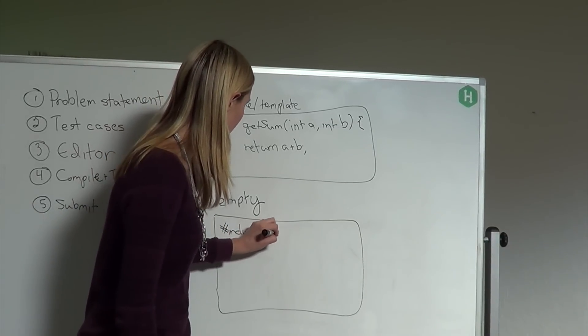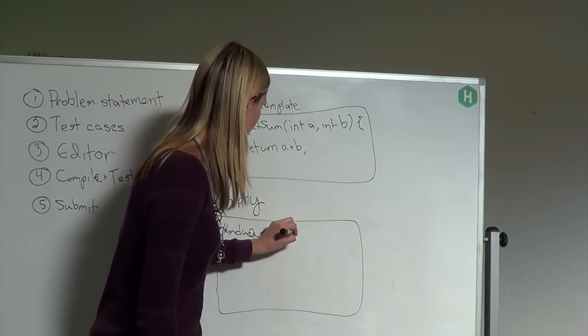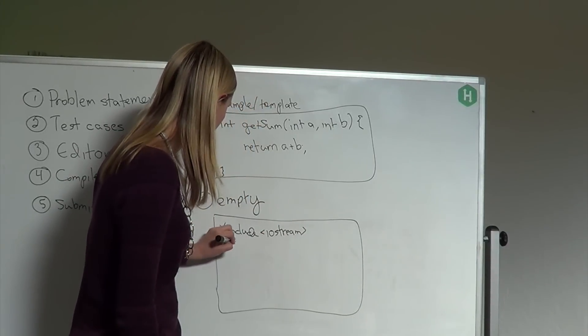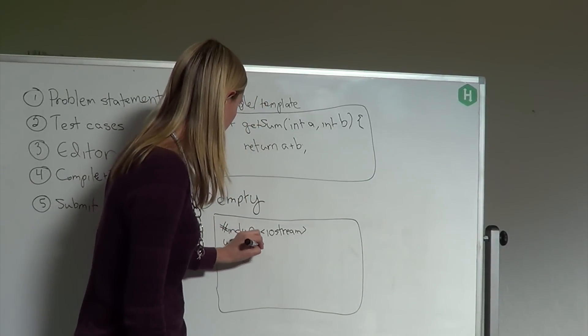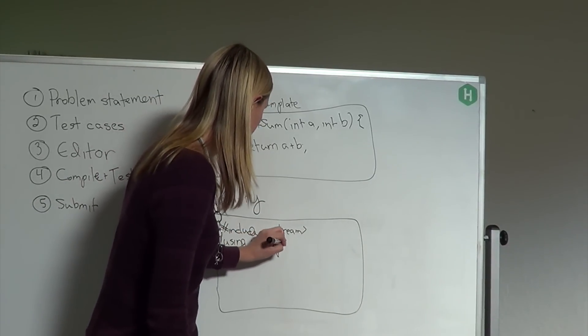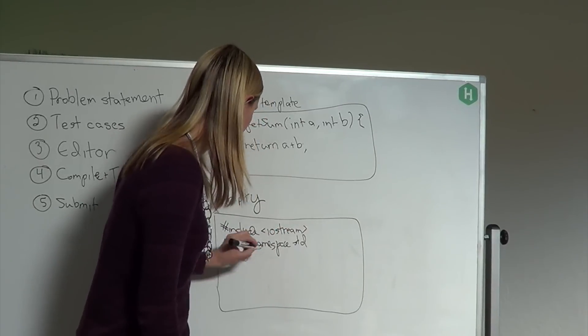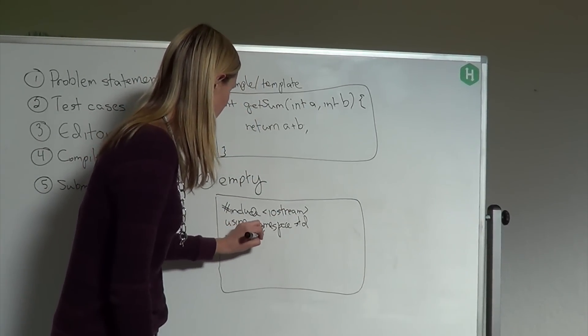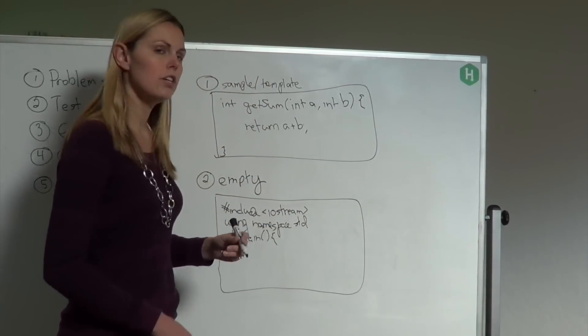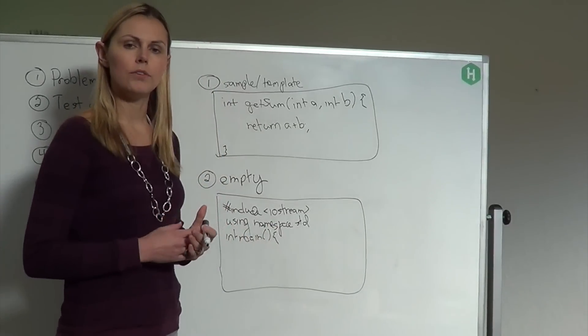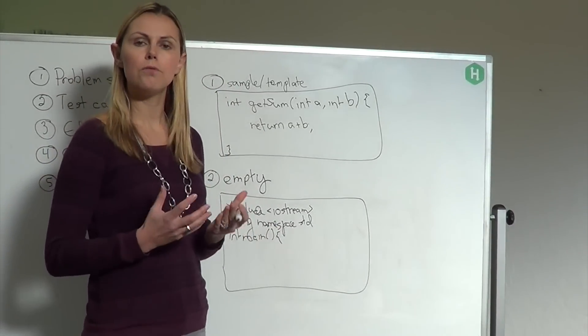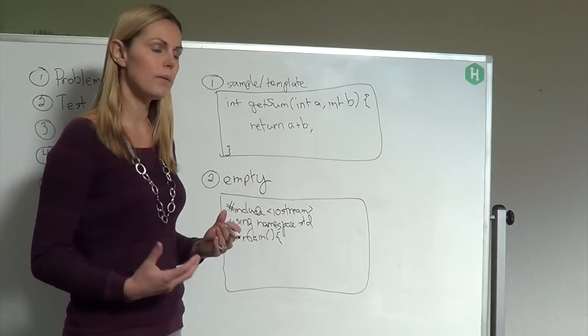So you'd write all your includes if you're working in C++. You'd write include iostream, then you'd write using namespace, and then you actually write your main function. And here you're going to use the standard inputs and outputs. You don't want to read from a file.